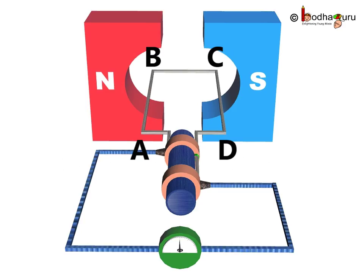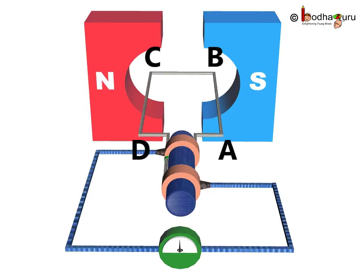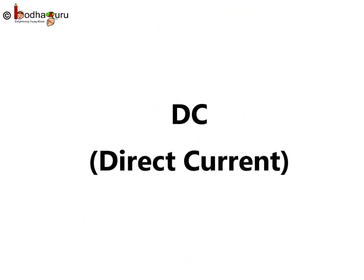As we saw, after every half rotation, the direction of the current in the two arms of the coil changes. So, how to get a direct current?